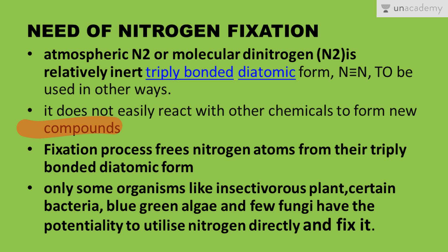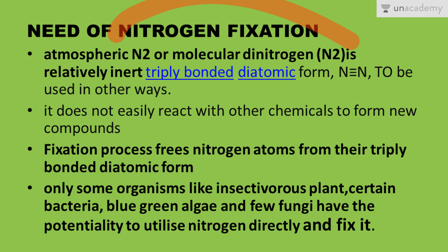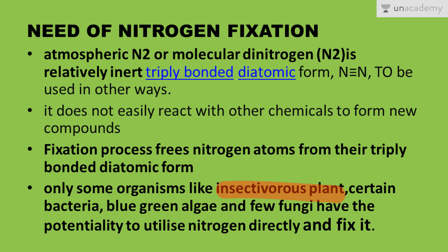In the process of nitrogen fixation, the two nitrogen atoms are freed from their triply bonded diatomic form. There are a few exceptions — organisms that can use nitrogen directly — including insectivorous plants, certain bacteria, blue-green algae, and some fungi. But in most cases, plants need to fix nitrogen before they can utilize it.